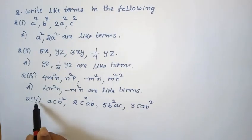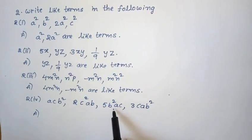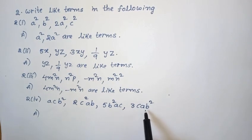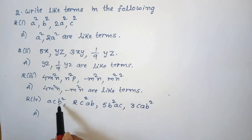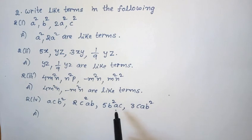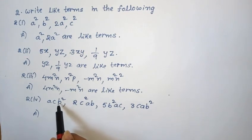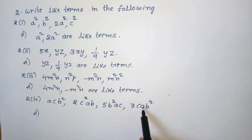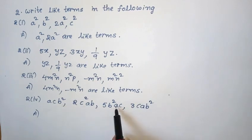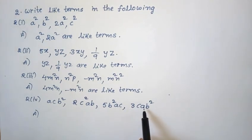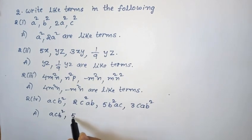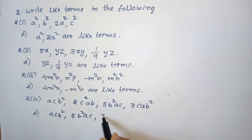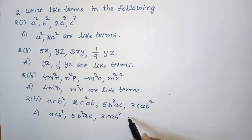Next, 2nd Roman, 4th one: acb squared, 2c squared ab, 5b squared ac, 3cab squared. Total four terms. In the first term the variables are ac and b squared. The third term 5b squared ac also has variables acb squared. The fourth term 3cab squared also has variables acb squared. So first, third, and fourth terms have equal variables with same exponents — acb squared, 5b squared ac, and 3cab squared are like terms.